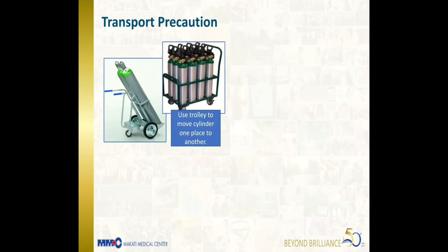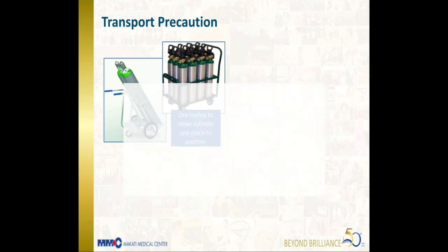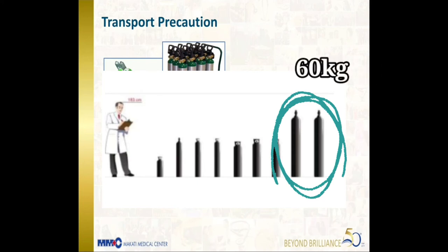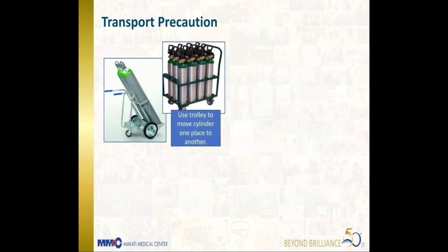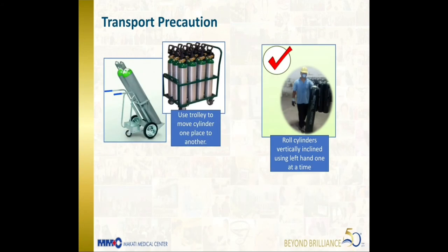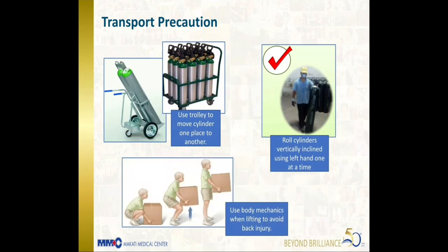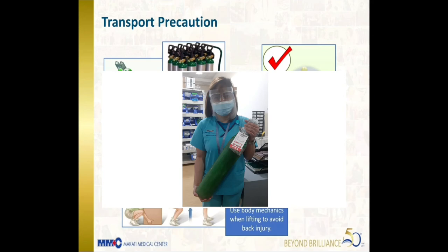Use a trolley to move cylinders from one place to another. Standard cylinders are made of full metal and weigh 60 kg, while flask types weigh 2.5 kg. Roll cylinders vertically inclined using the left hand, one at a time, controlling the center of gravity to avoid accidentally opening the valve. Use body mechanics when lifting to avoid back injury — pick up the cylinder by bending the knees forward and maintaining a neutral position.